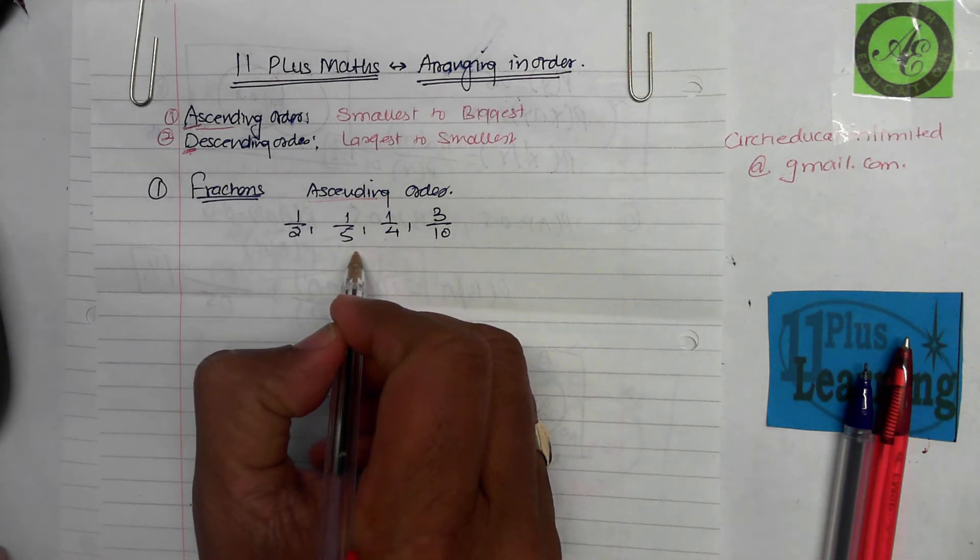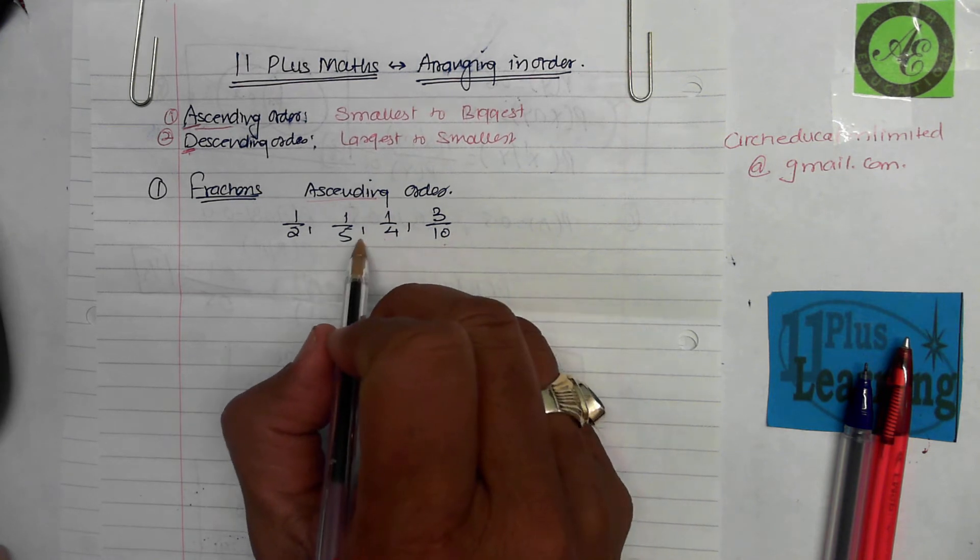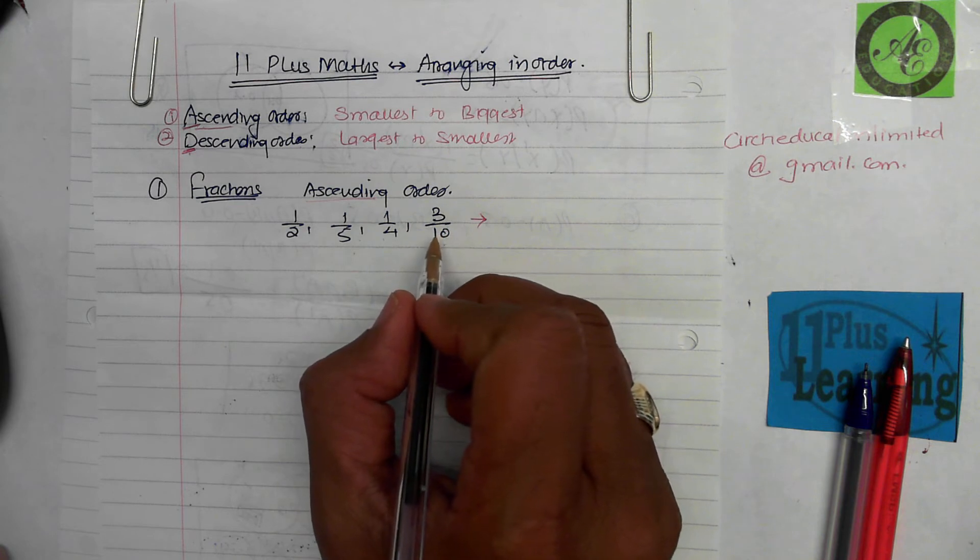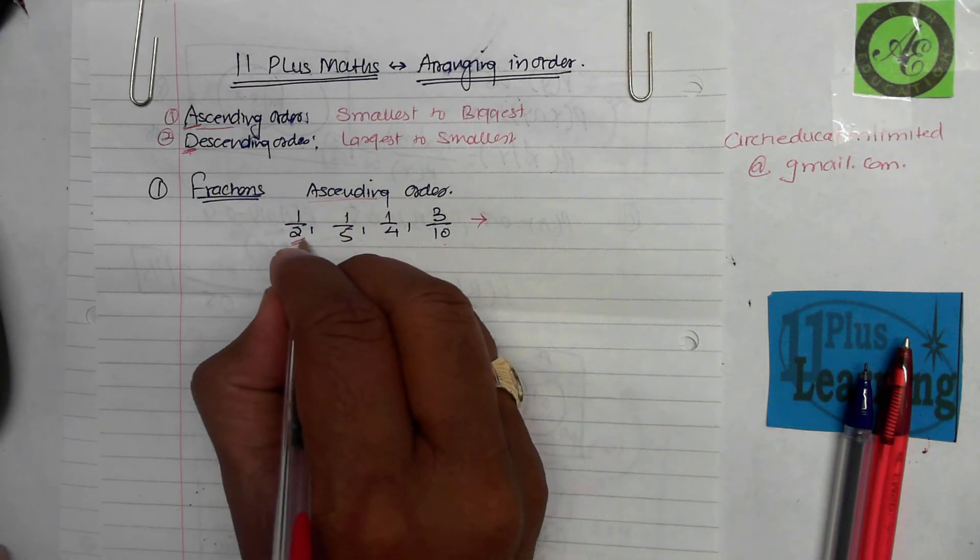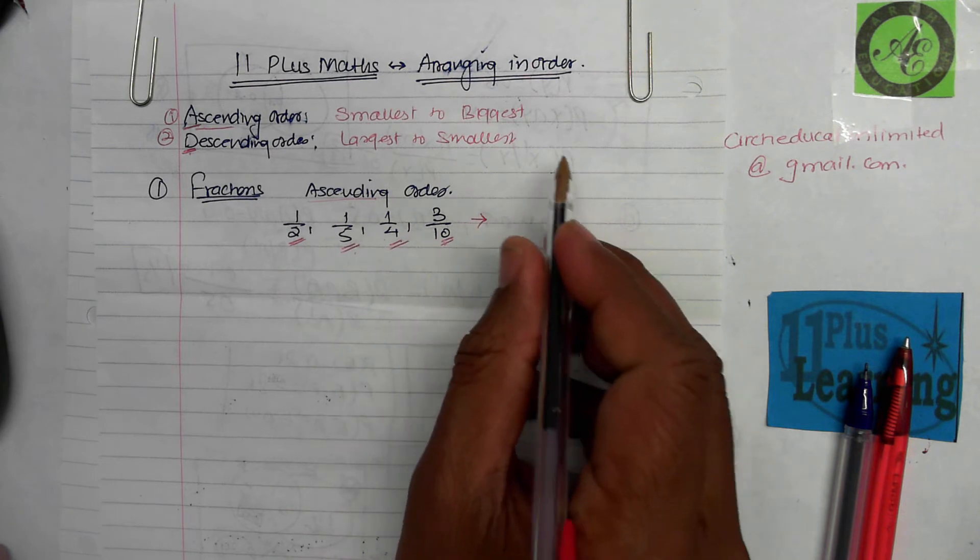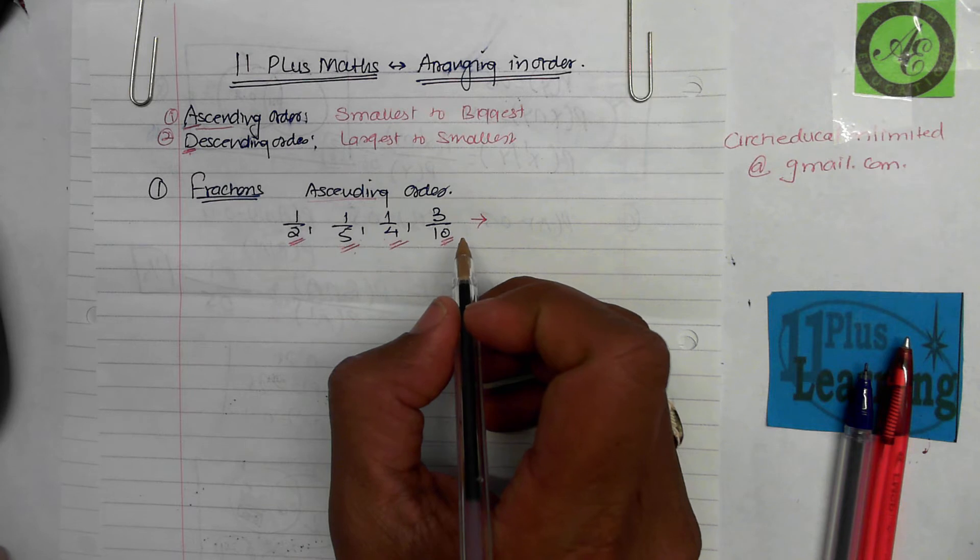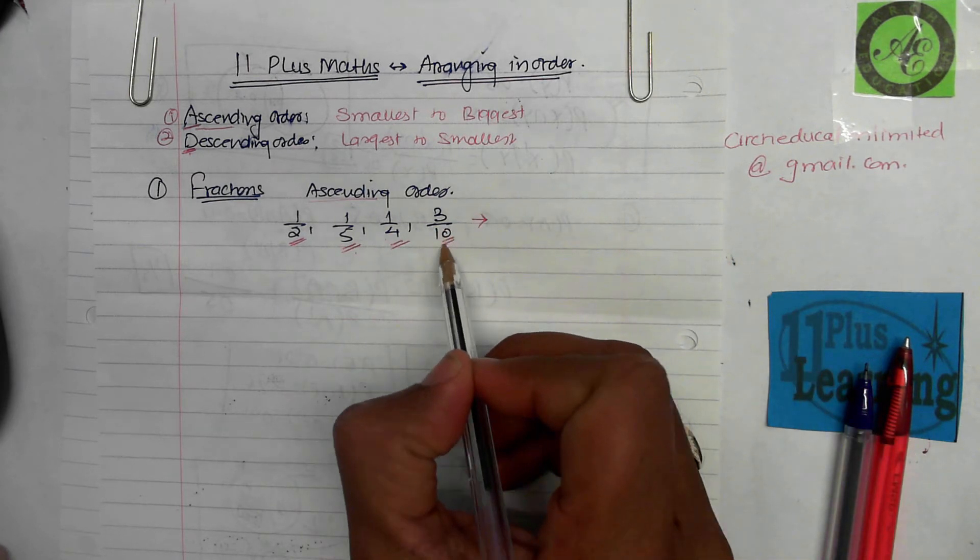As you see, all the fractions have different denominators. Step one is you have to make denominators equal before you can compare the fractions. Numerators don't matter at this stage. The numbers two, five, four, and ten all go into a bigger number, a multiple, or lowest common multiple. You can use the methods you've learned before.